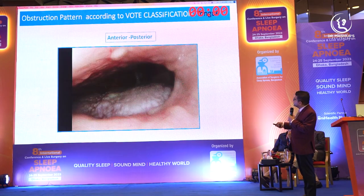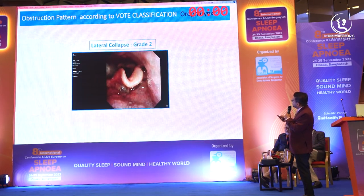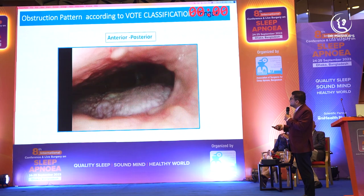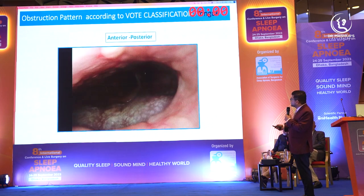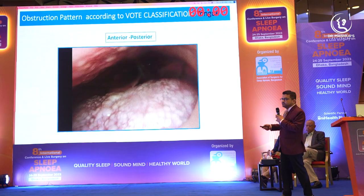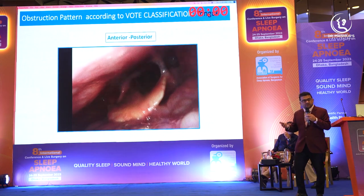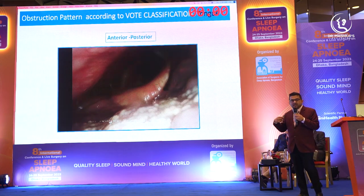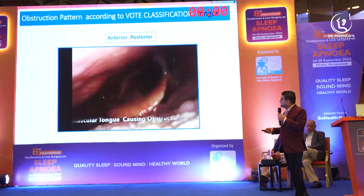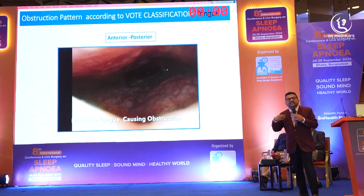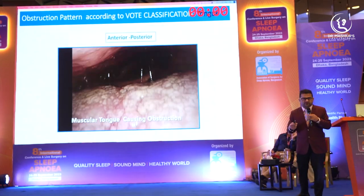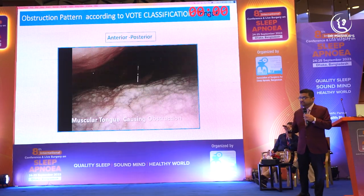Similarly, at the tongue base — in the context of hypoglossal nerve stimulation surgery — sleep endoscopy will tell something. At the tongue base, it will tell whether this is a muscular tongue collapse, or a primary collapse, or many other things. So we can tailor-make our treatment individually.